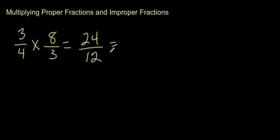Now obviously, this can be simplified. 12 goes into 24 2 times, so there you go, we have 2 as our answer. So 3 quarters multiplied by 8 thirds is 2.